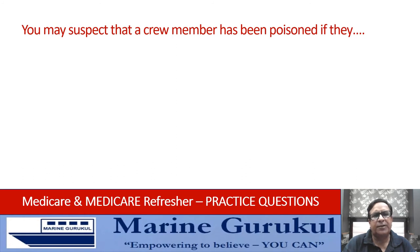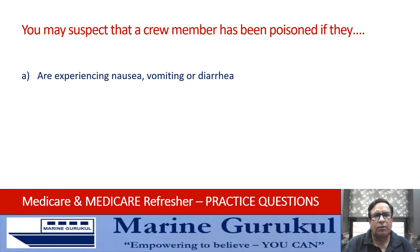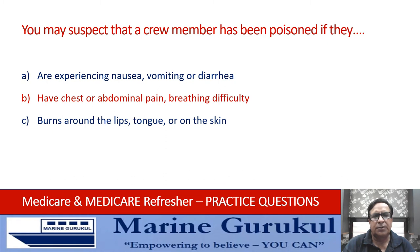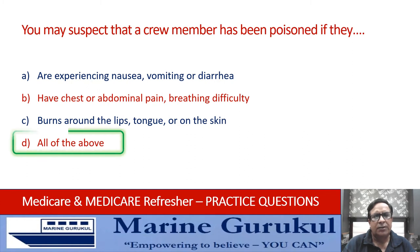You may suspect that a crew member has been poisoned if they are experiencing nausea, vomiting, or diarrhea; have chest or abdominal pain; breathing difficulty; burns around the lips, tongue, or on the skin; or all of the above. The answer is D — all of the above symptoms are symptoms of poisoning.